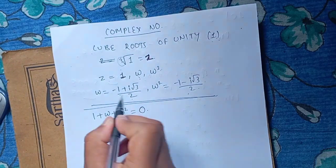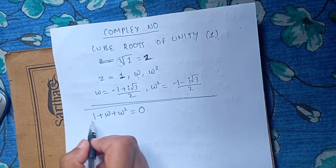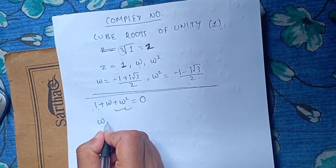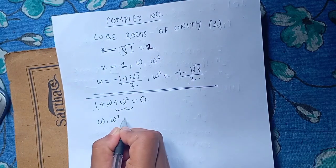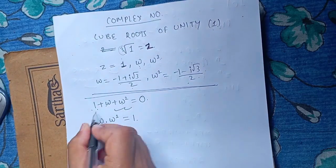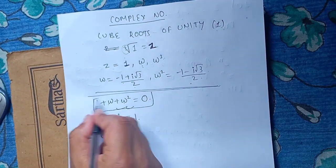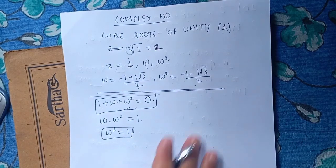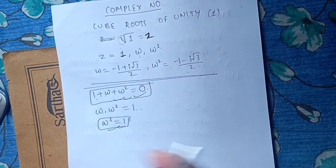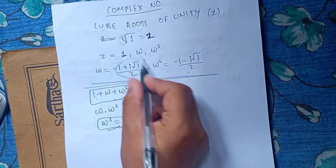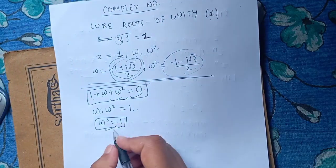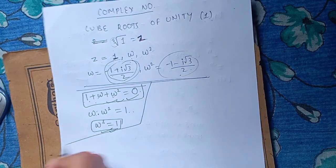Omega square is equal to omega square, and 1 is equal to 1. So the other way we can express that is equal to omega square. So omega square will be equal to 1. The other way we can do it is: omega square equals 1, omega squared is equal to 0.